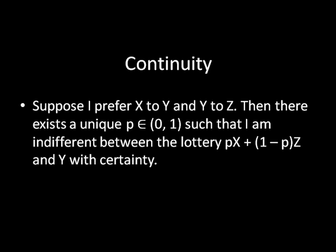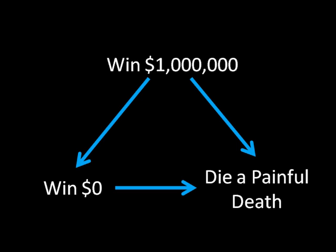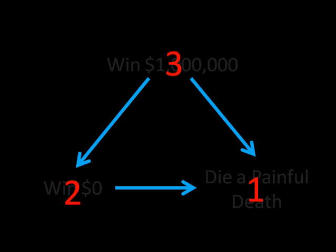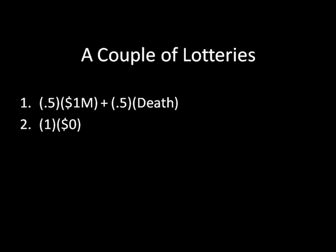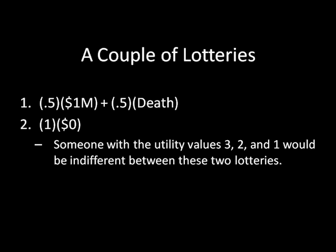To look at a concrete example, we've been talking about winning a million dollars, winning zero dollars, and dying a painful death, and the preference relation over that. We've looked at these expected utility values in the past, which signified this person prefers winning a million dollars to winning zero dollars to dying a painful death, using three, two, and one as the utility values. So what I'd like to look at is a couple of lotteries using those utility values. In this first lottery, you win a million dollars with probability one half and you die a painful death with probability one half. In the second lottery, you win nothing with certainty — a degenerate lottery. I'm going to claim that someone with utility values three, two, and one would be indifferent between these two lotteries.